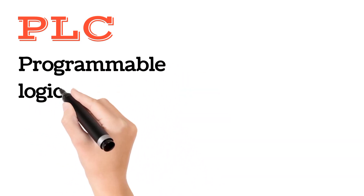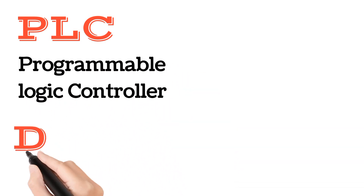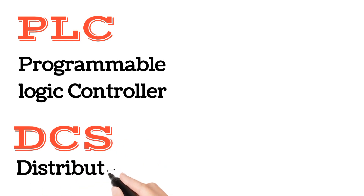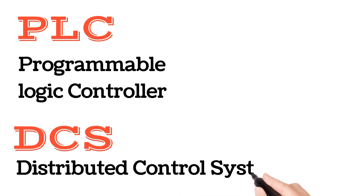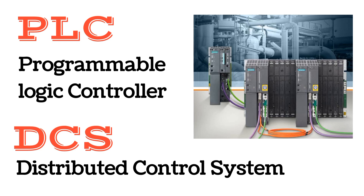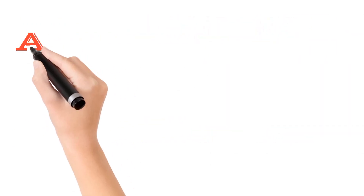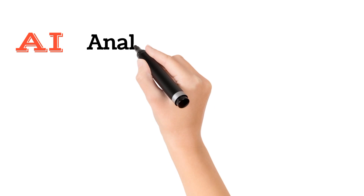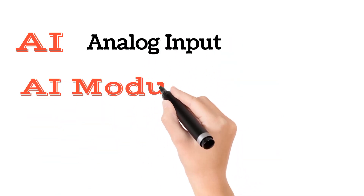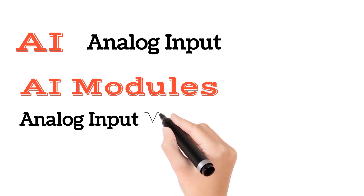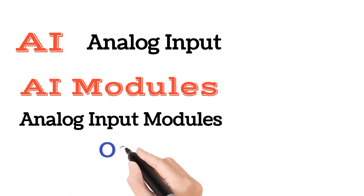PID means proportional integral derivative. PLC means programmable logic controller. DCS means distributed control system. PLC and DCS full forms are mostly asked in interviews.